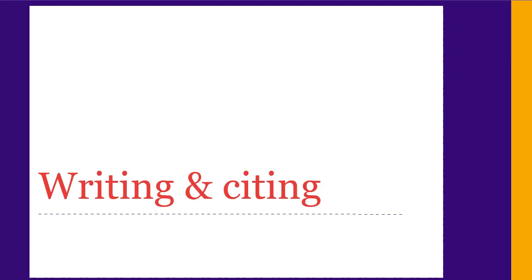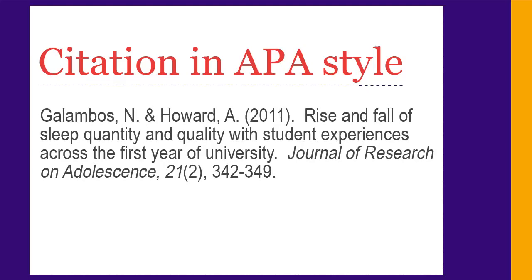Now that you have a topic and have selected some good sources, you need to write your annotated bibliography. To do that, you need two things for each source. The first is a citation for the source, formatted properly in a standard citation style like MLA, APA, or Chicago.